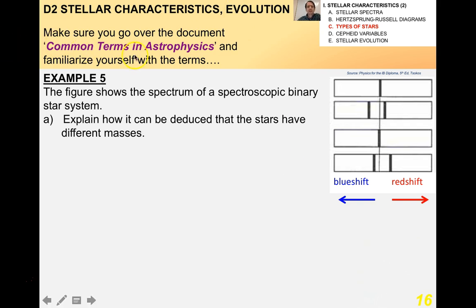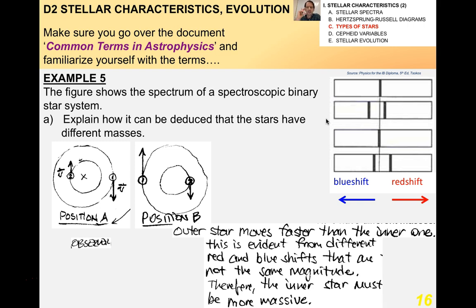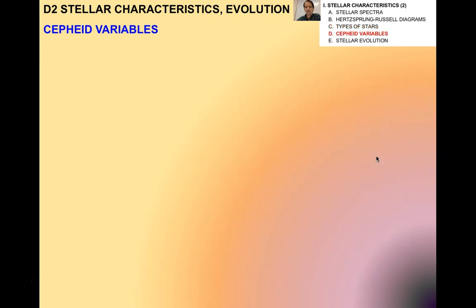If lambda naught is the wavelength of the spectral line and lambda is the wavelength received on Earth, then the shift would be the absolute value of the difference between them divided by the wavelength of the spectral line. If the speed of the source is small compared with c, then Z is approximately equal to V over C. We'll talk a little bit more about that later when we talk about the red shift of the universe. Make sure you go over the document Common Terms in Astrophysics, which I provided to you digitally and familiarize yourself with all those terms. You don't have to memorize them all, but just be familiar with how to use them. Example five. The figure shows the spectrum of a spectroscopic binary star system. You can see the red shift over on this side and a periodic blue shift. Explain qualitatively how it can be deduced that the stars have different masses. And this is how you do it. You can draw a diagram. Of course, the IB loves diagrams. The outer star moves faster than the inner one. This is interesting. This is evident from different red and blue shifts that are not the same magnitude. Therefore, the inner star must be more massive. Pretty cool stuff.